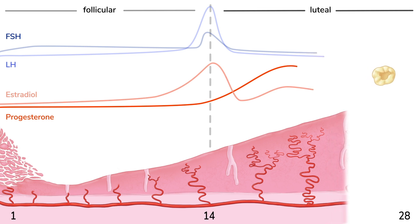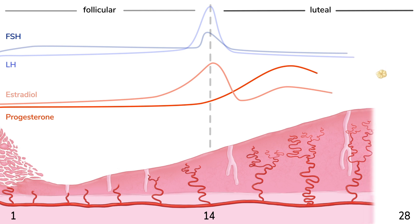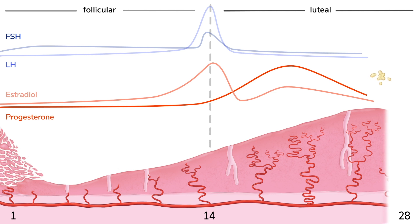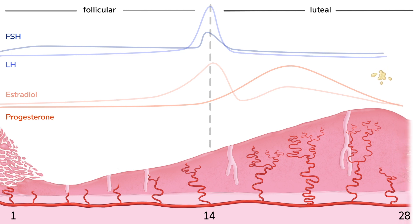If fertilization and implantation do not occur, the corpus luteum degenerates — because there's no placenta to produce HCG to support it — and levels of estrogen and progesterone decline. This decline causes the endometrial blood supply to diminish, which in turn causes a breakdown of the tissue and the sloughing off of the endometrium, which is the bleeding that happens during menses.